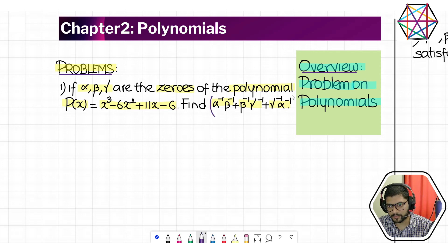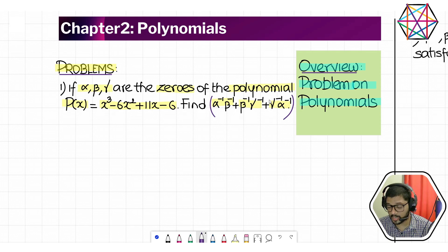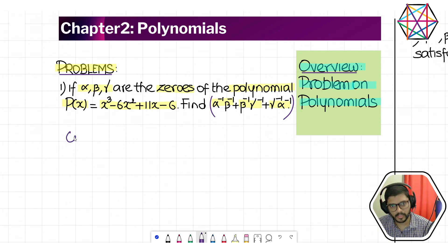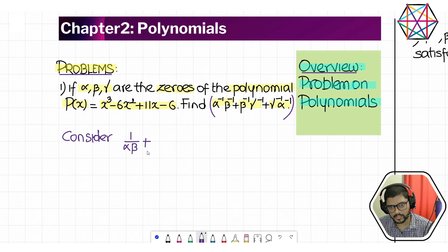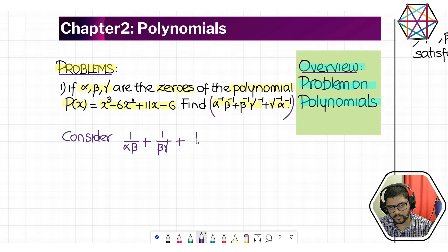Starting with whatever is given: α⁻¹β⁻¹ + β⁻¹γ⁻¹ + γ⁻¹α⁻¹. What is α⁻¹β⁻¹? Alpha inverse is 1/α and beta inverse is 1/β, so it is simply 1/(αβ). Similarly, β⁻¹γ⁻¹ is 1/(βγ), and γ⁻¹α⁻¹ becomes 1/(γα).